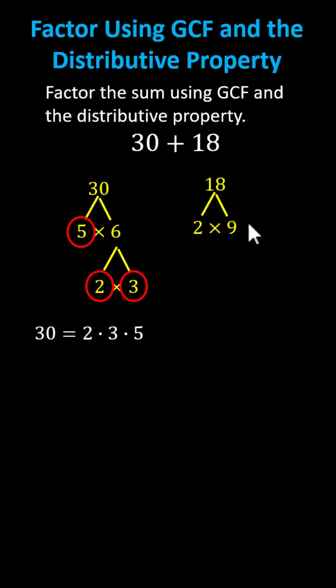For 18, let's start with two times nine, where two is prime. Nine equals three times three, and three is prime. The prime factorization of 18 is two times three times three.